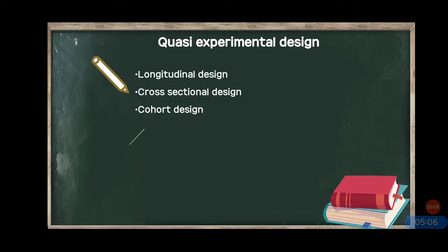We get results quickly in cross-sectional because you look at different but similar age groups instead of waiting for the original group to change. So this is about cross-sectional and longitudinal design.